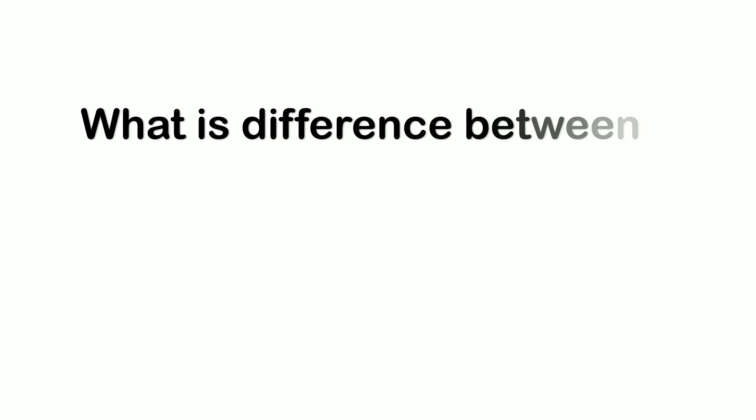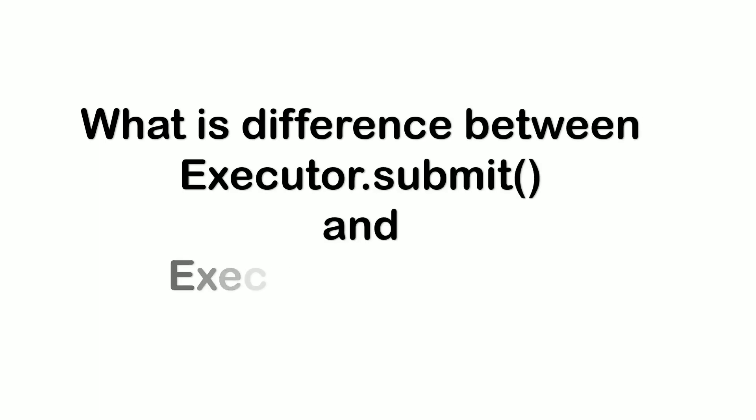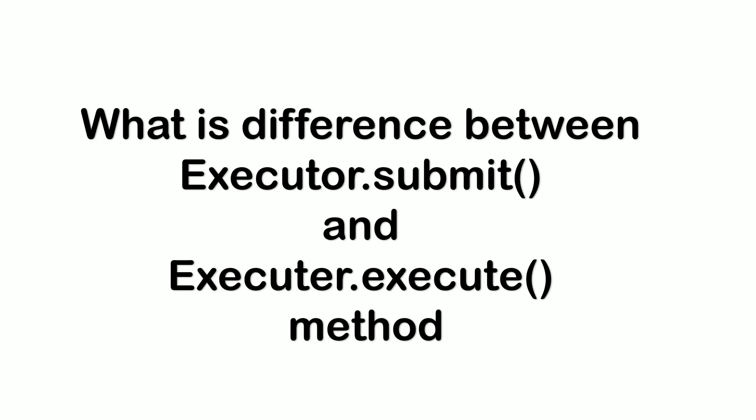The next question was: what is the difference between executor.submit() and executor.execute()? The submit() method can accept both Runnable and Callable tasks, but execute() can only accept Runnable tasks. The submit() method is declared in the ExecutorService interface, while execute() is declared in the Executor interface. Additionally, the return type of submit() is a Future object, but the return type of execute() is void.